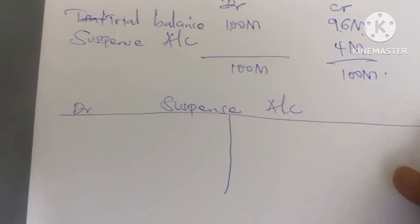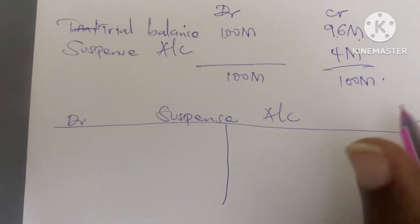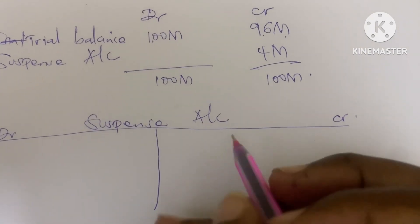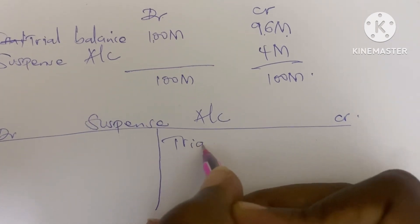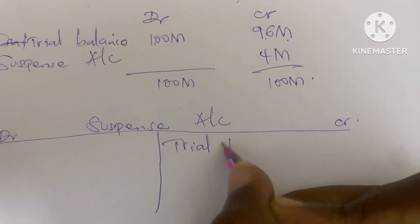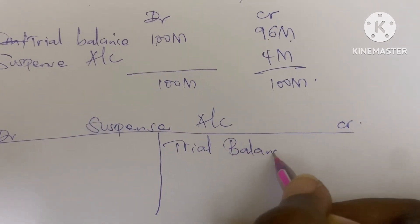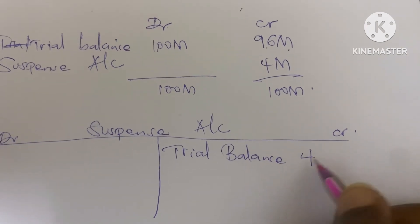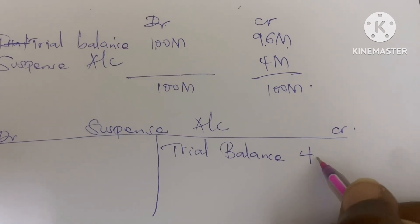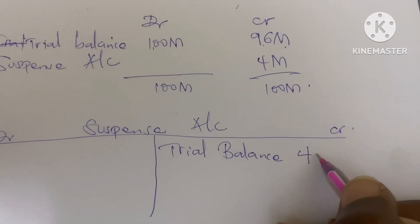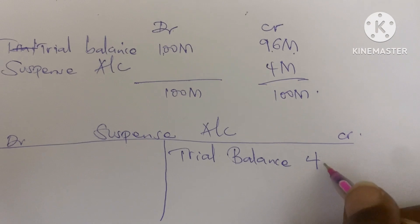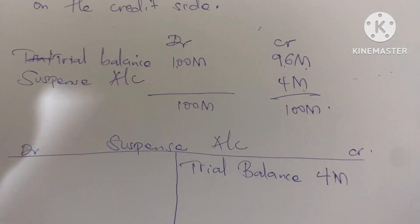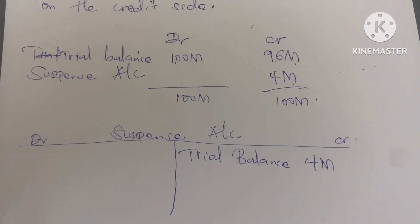The suspense account has a debit side and a credit side. Trial balance: 4M on the credit side, since in the trial balance it appeared on the credit side.